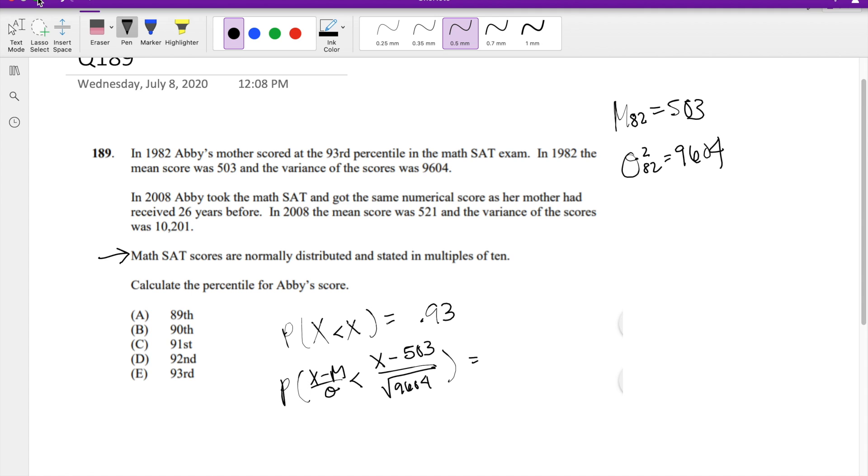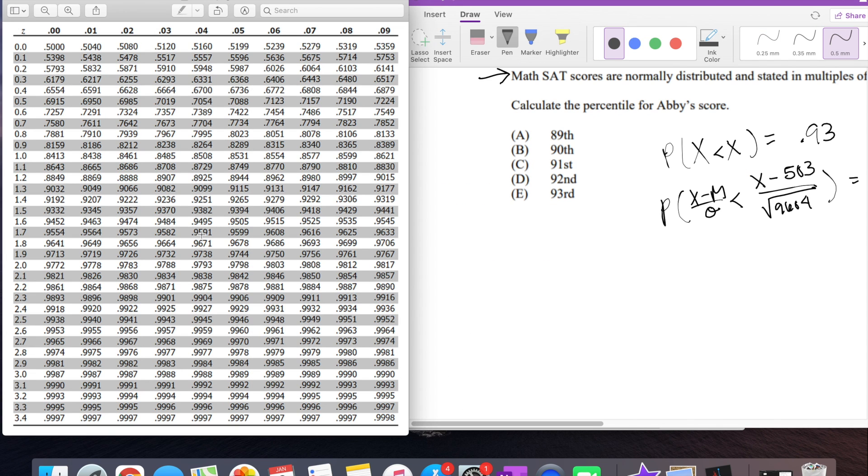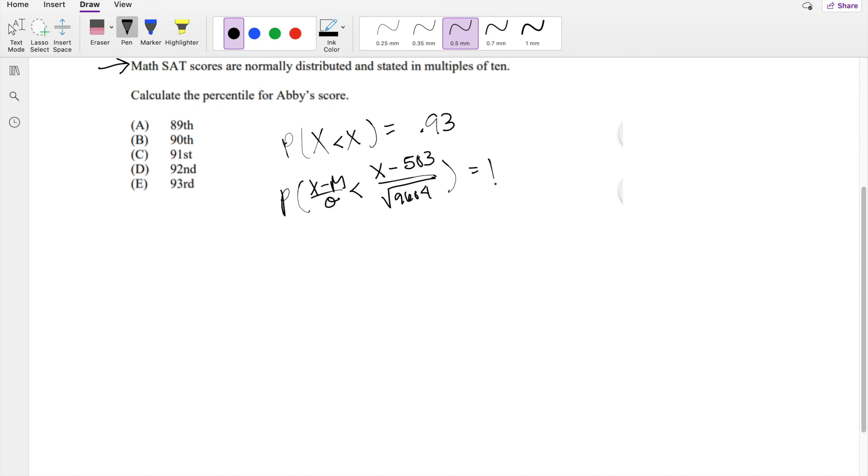93% is about 0.93 here, like 1.47 or 1.48, let's say, is equal to 1.48.